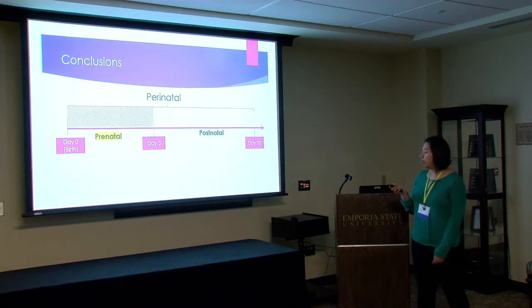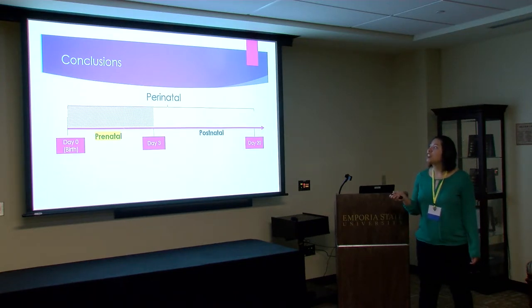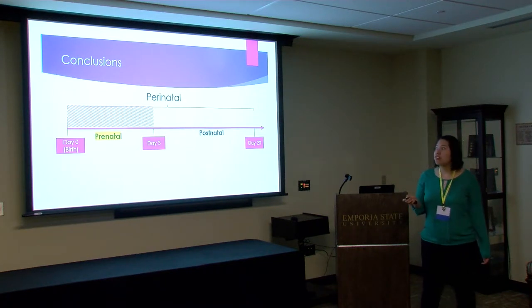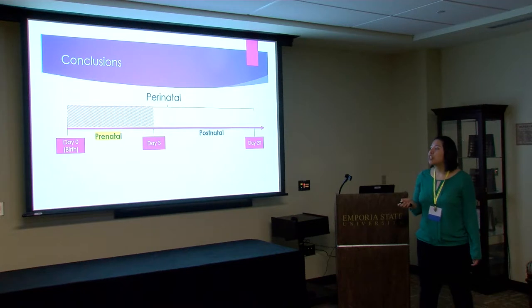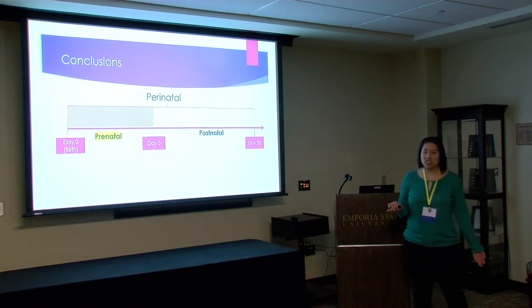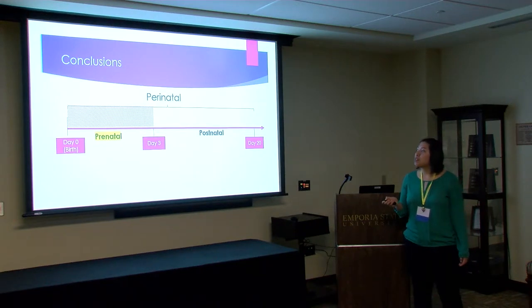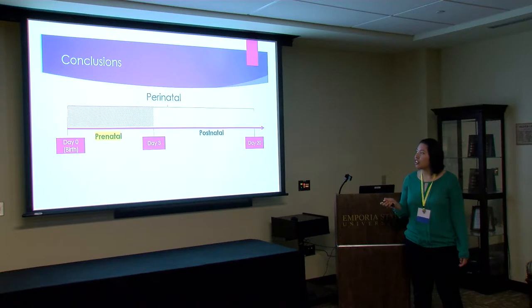In conclusion, the group most affected is when interleukin-2 is blocked through the full perinatal period. Interestingly, the bacterial diversity of the postnatal group is even lower than the control group. This tells us that the effect of the perinatal period comes mostly from the blockage of interleukin-2 through day 0 to day 3.